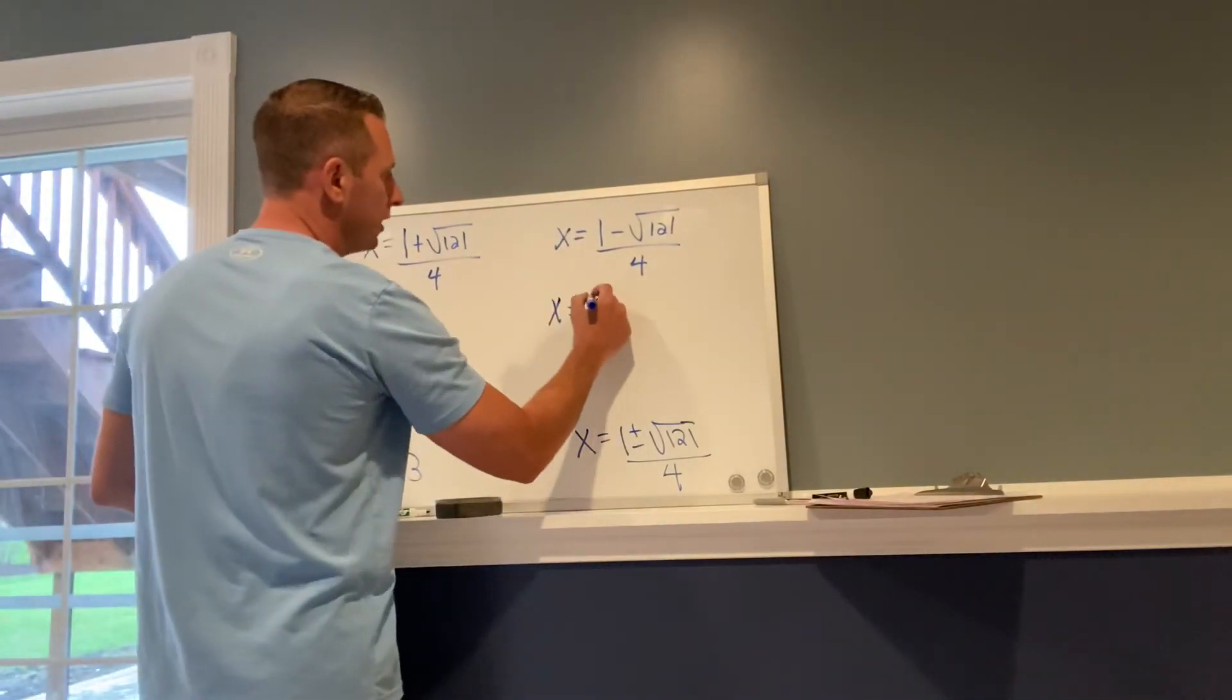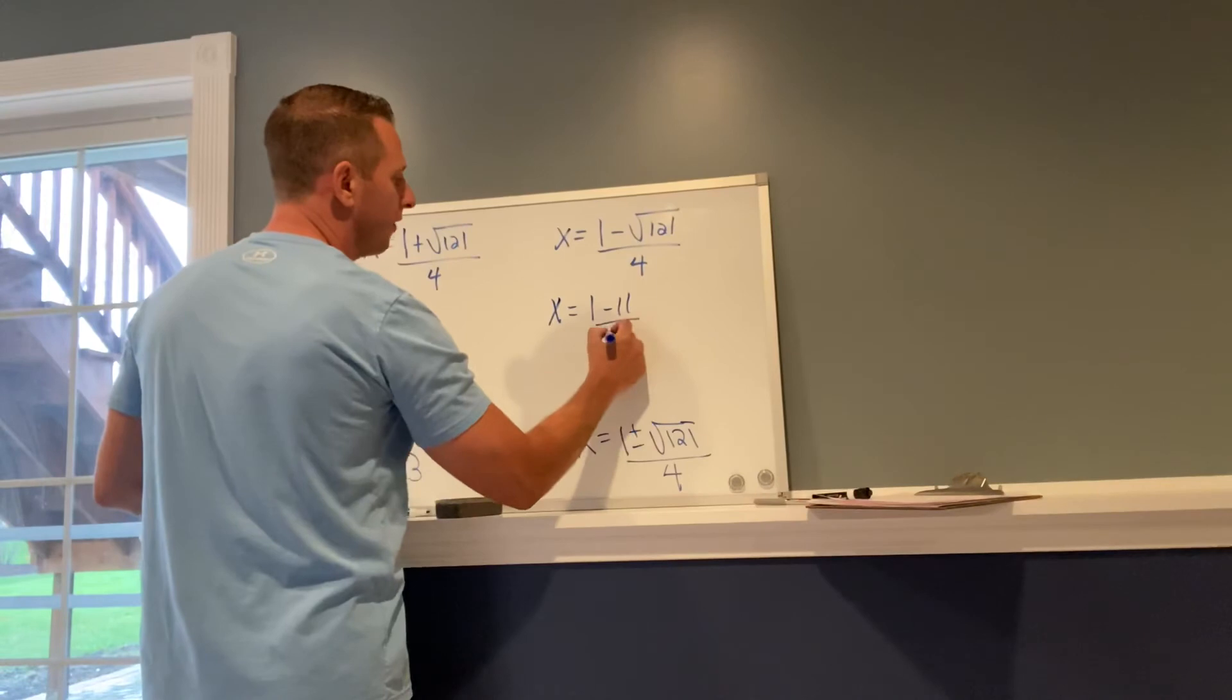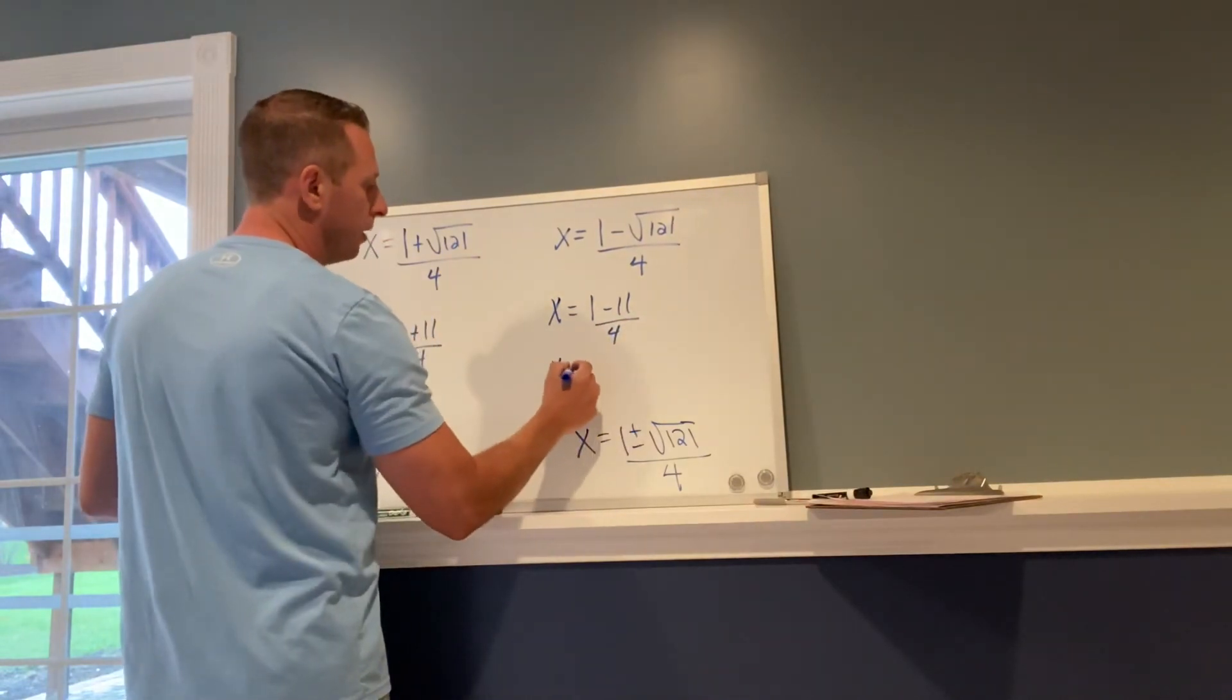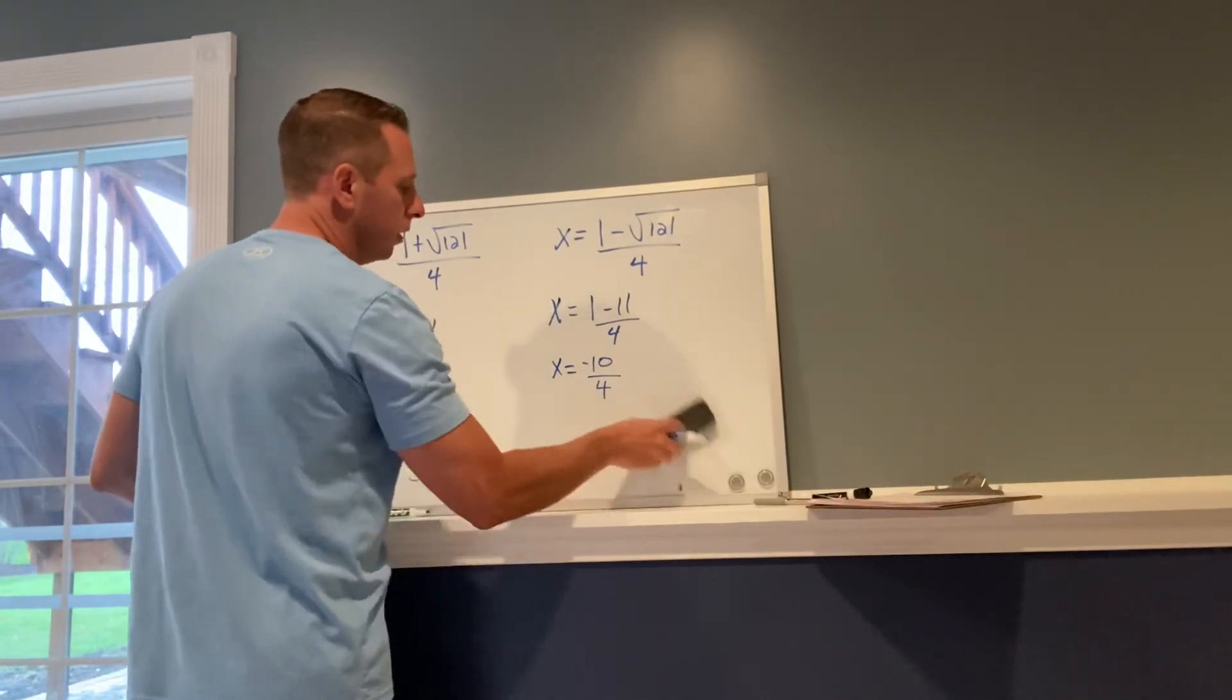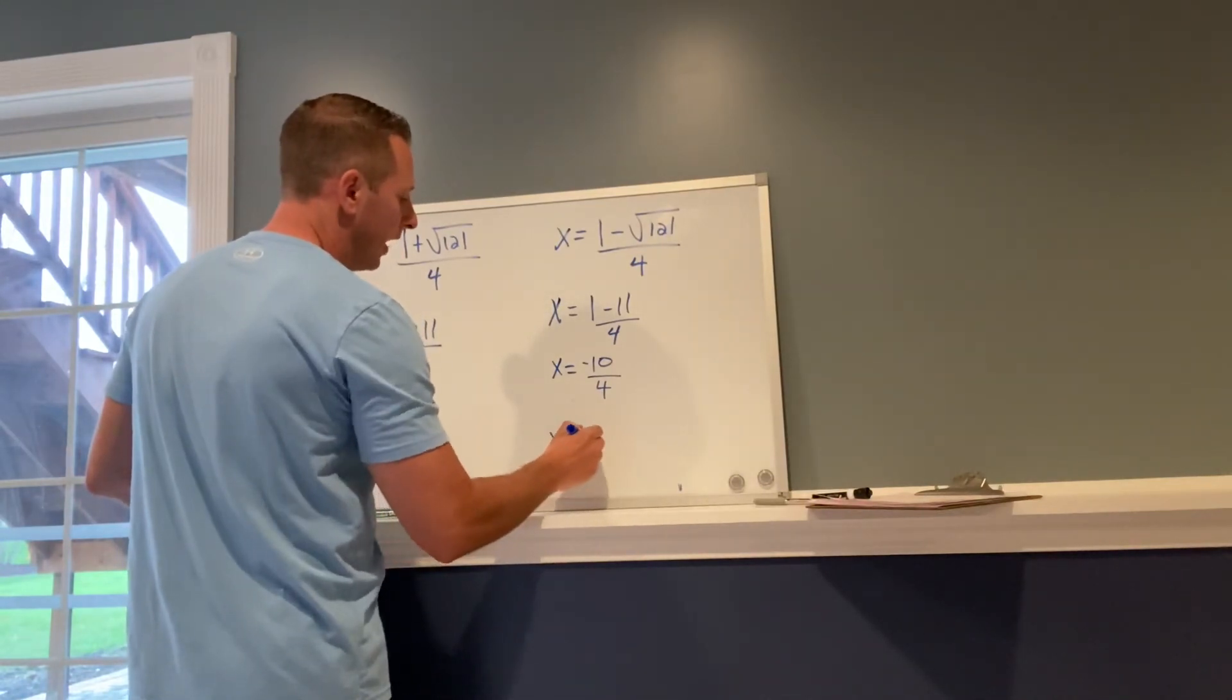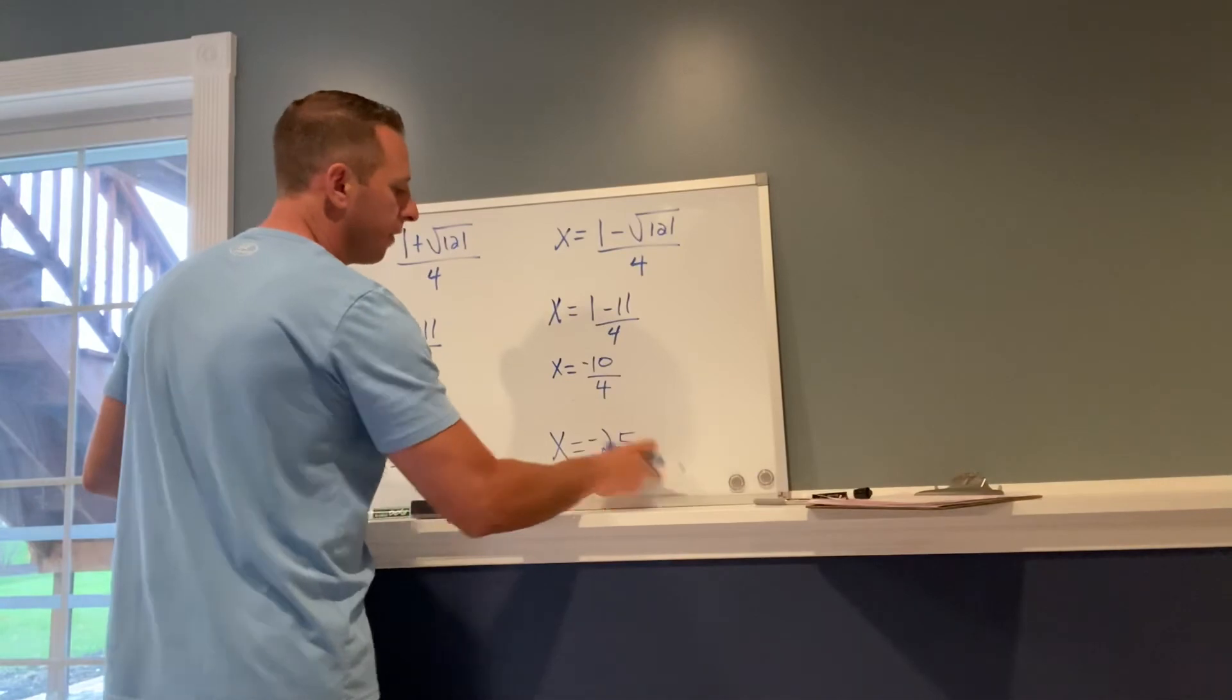Over here, x equals 1 minus 11 divided by 4. That's going to be equal to negative 10 over 4, which is equal to negative 2.5.